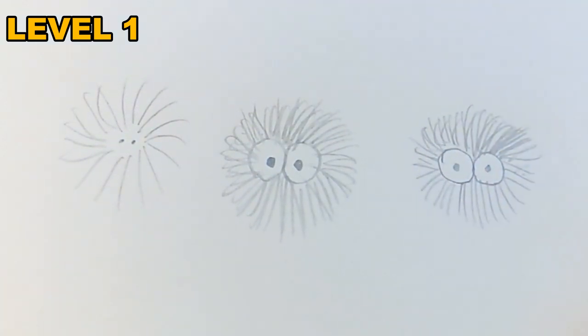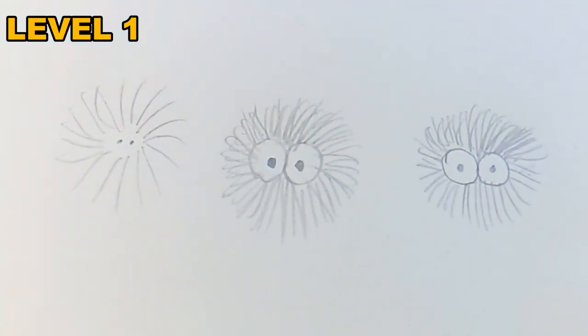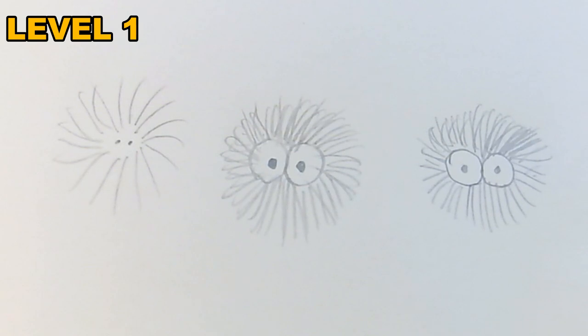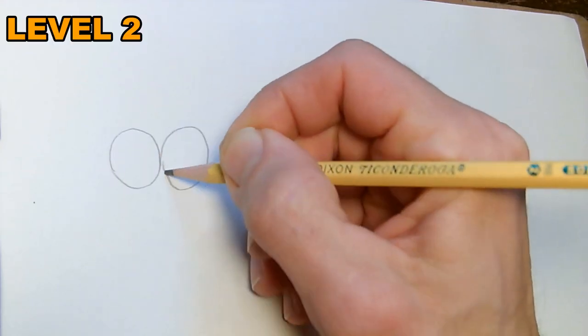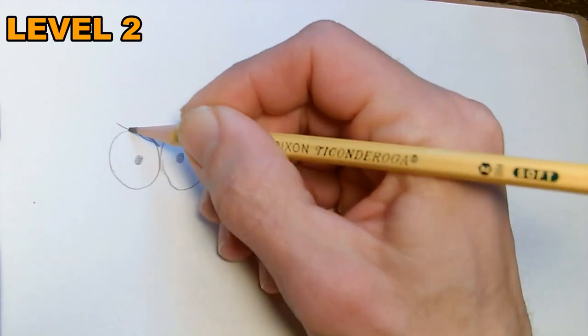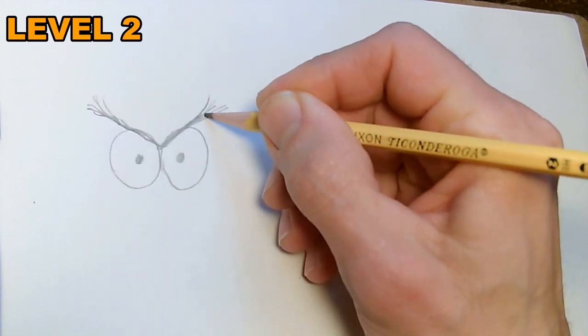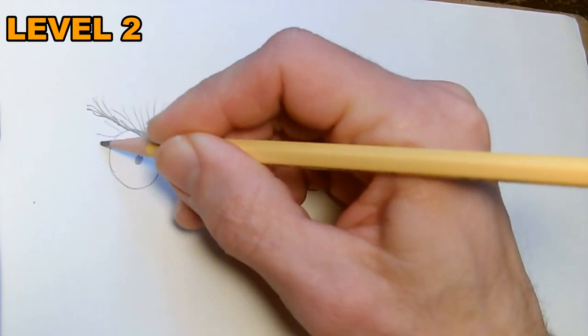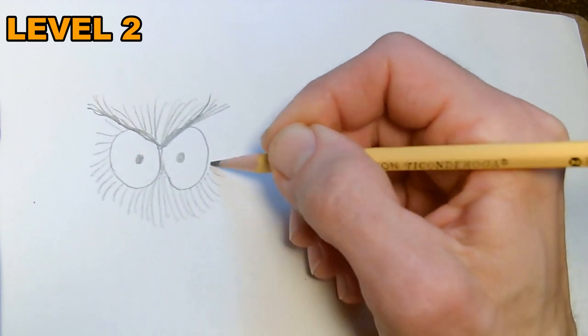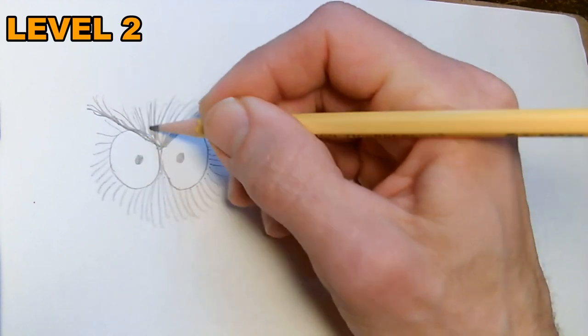Of course, a level two monster has those two circles and two eye spots, and then eyebrows. So we'll bring these eyebrows out and flare them at the ends to give it a little character. Then we'll bring the fur all the way around, and there's an intense monster stare. Level two monster.